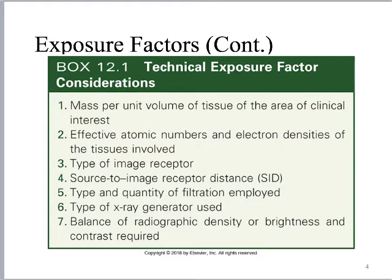Using different types of image receptors is a significant consideration. In the digital age, we see this when comparing photostimulable phosphor plate technology — what we used to call CR cassettes — versus digital imaging like indirect or direct digital imaging. For the most part, the DR, the newer cassettes, are going to decrease patient dose because they have a higher detective quantum efficiency. Increasing source to image receptor distance also decreases patient dose, following directly from the inverse square law.